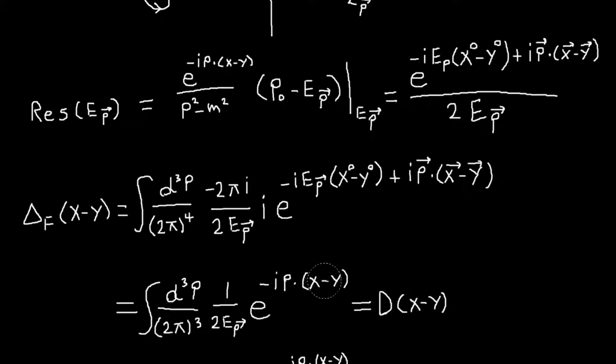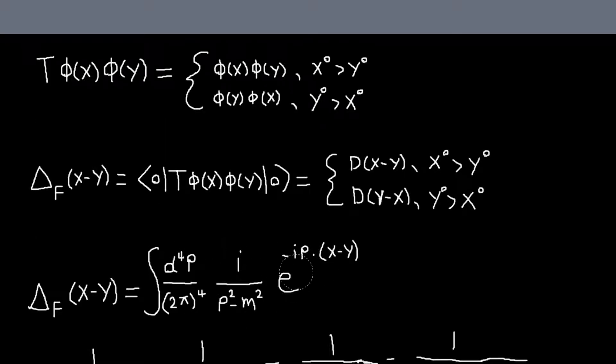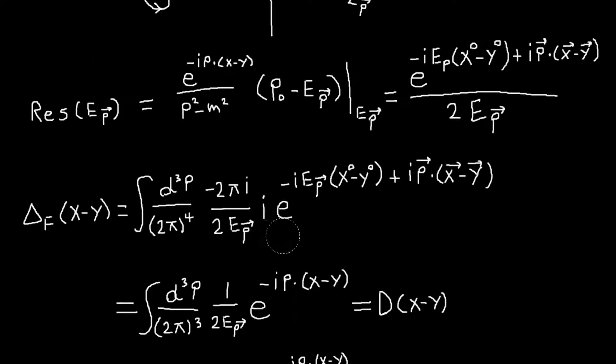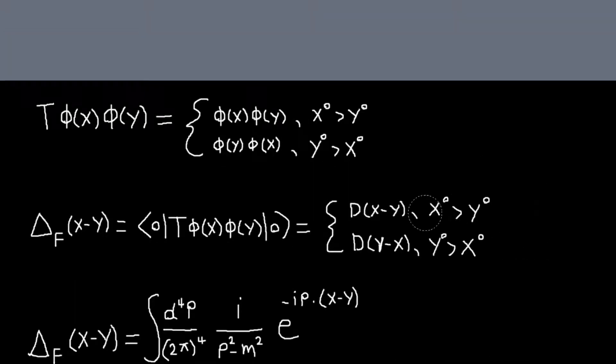So it's kind of a subtle thing. So again, before, when we've written p·x or whatever, we always, it's always understood that p^0 is equal to E_p. That's the on shell condition. So when I write this, it's kind of how we've been writing it before. There's a meaning that we've been writing it before, as opposed to when I wrote that up here, where p^0 is free to vary. It can be anything.